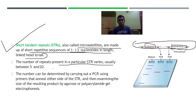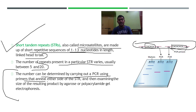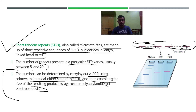The number of repeats present in short tandem repeats can be determined by carrying out a PCR using primers that flank either side of the STR. The size of the resulting product is then examined by agarose or polyacrylamide gel electrophoresis.